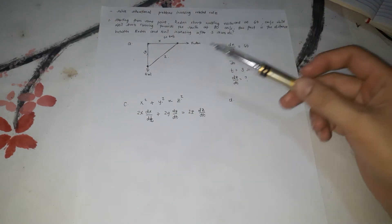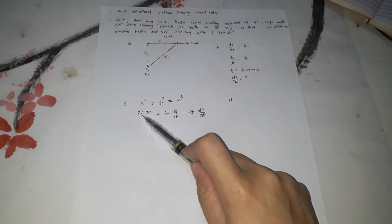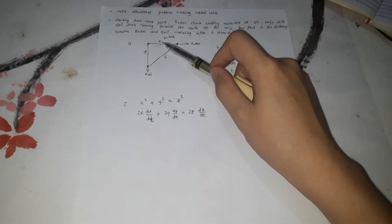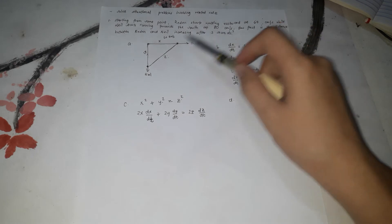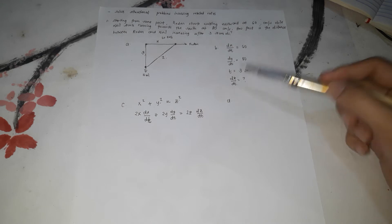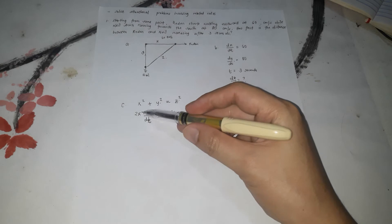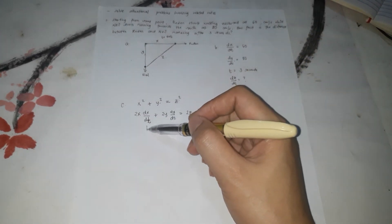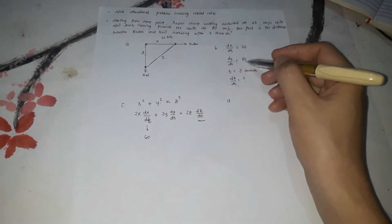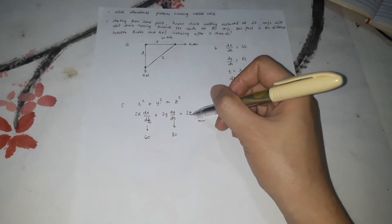For letter D, we need to find all variable values before substituting. The unknown is only dz/dt, so we need x, y, and z. We know dx/dt = 60 and dy/dt = 80, but x, y, and z are not directly given. We use distance = rate × time. For Reden: x = 60 × 3 = 180 cm. For Nail: y = 80 × 3 = 240 cm.